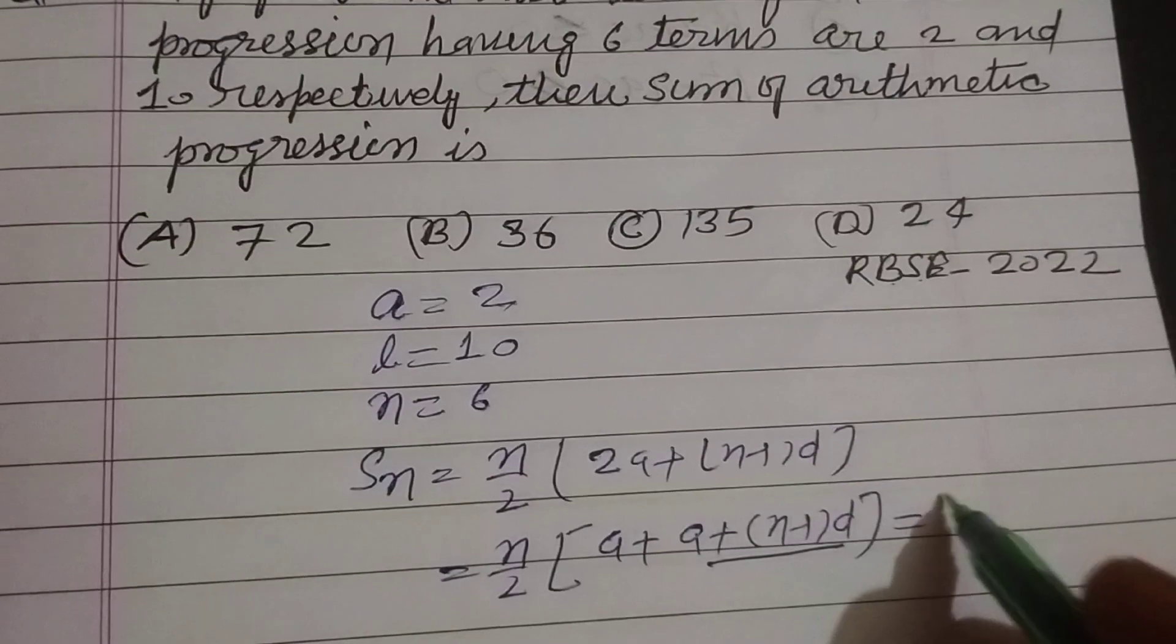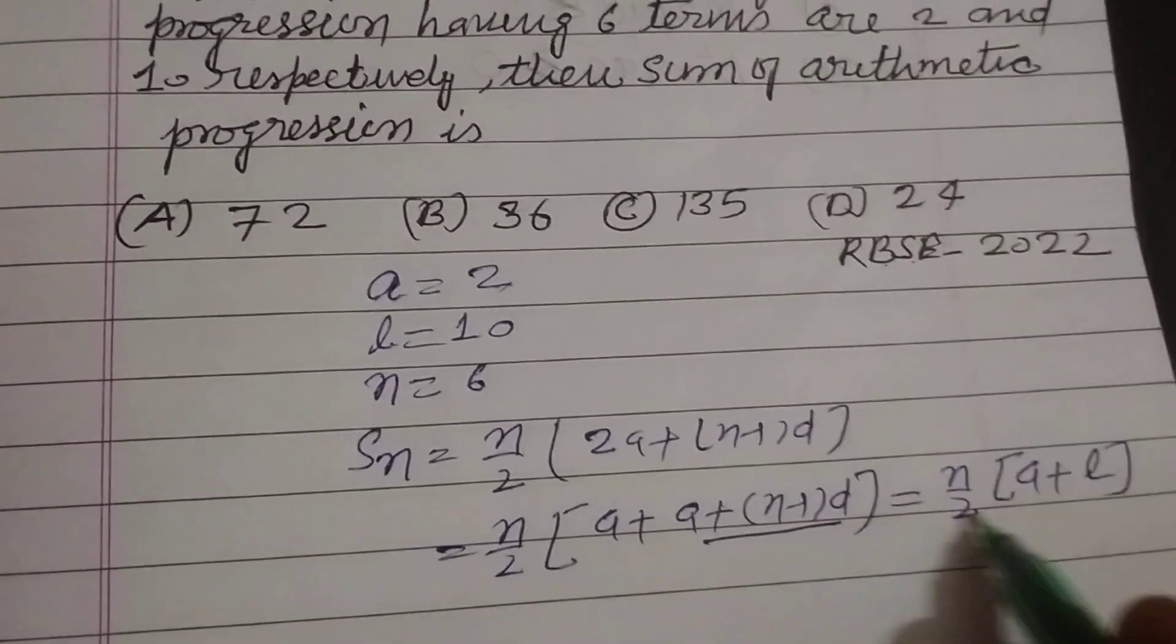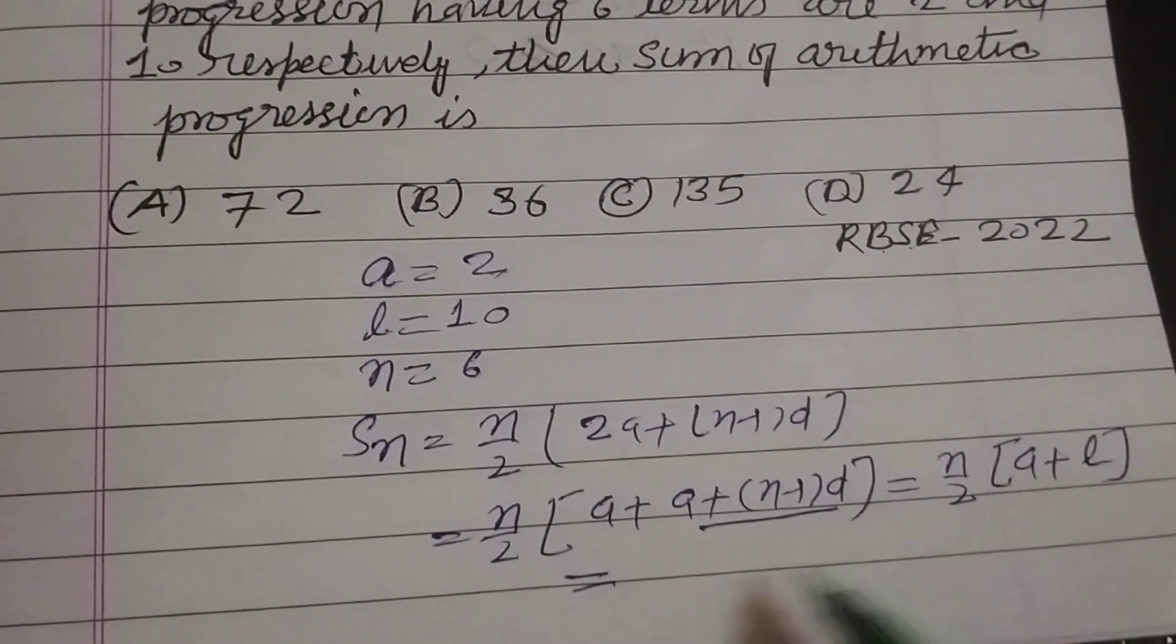This is the last term. So n by 2, a plus l. So this is the sum of the term when last term and first term is given.